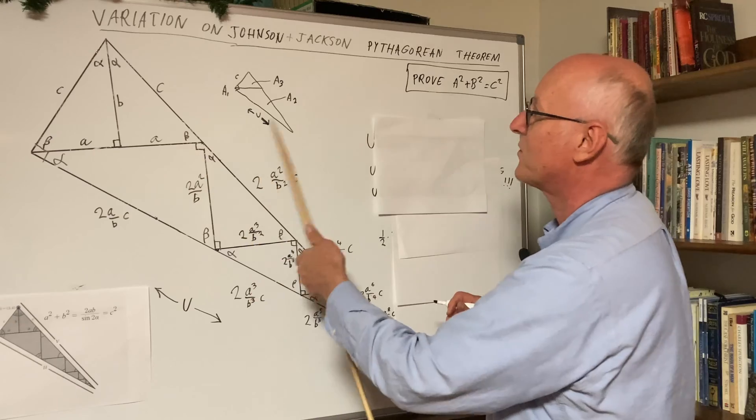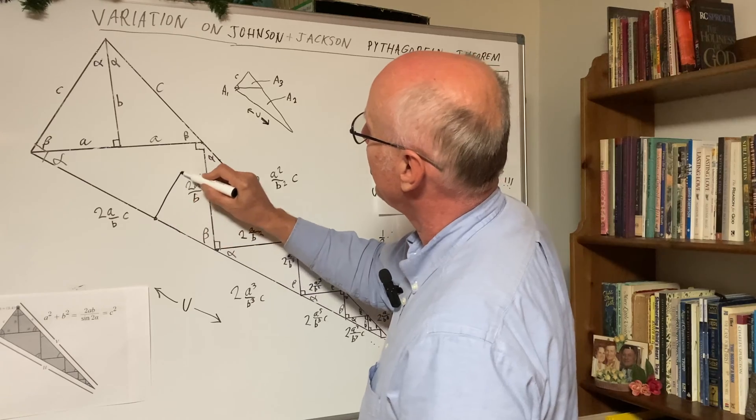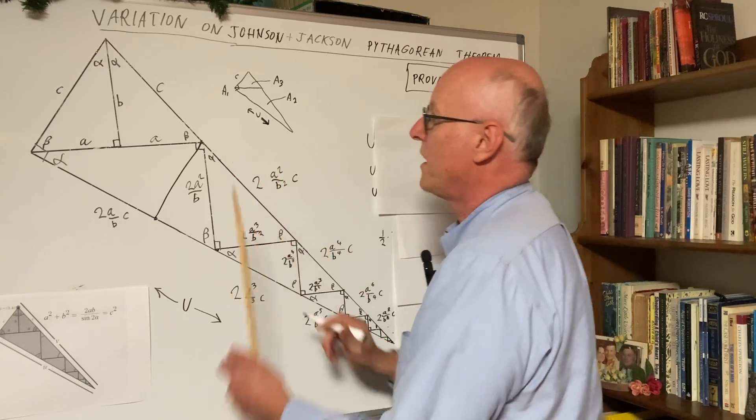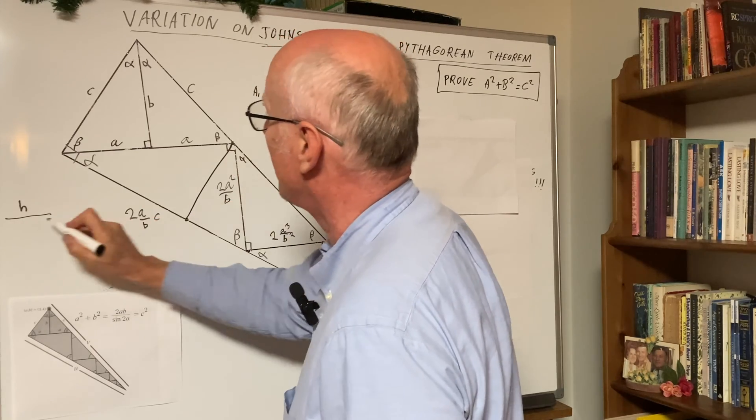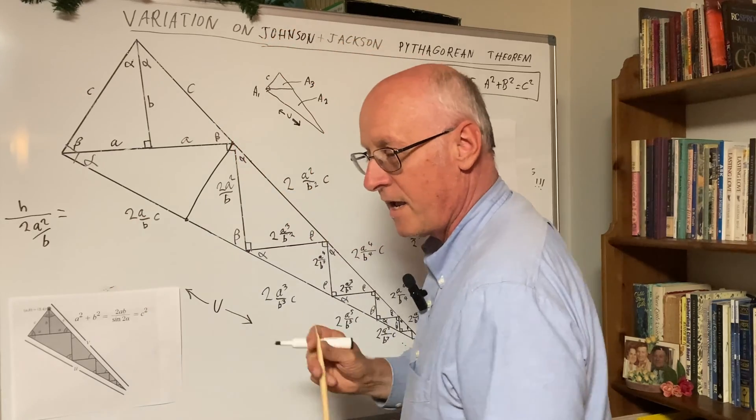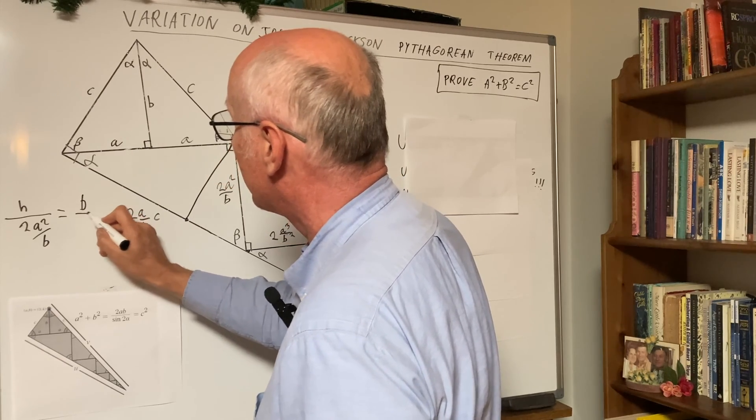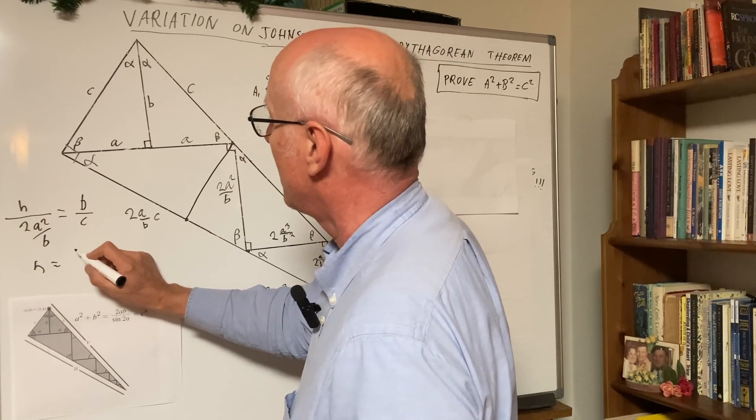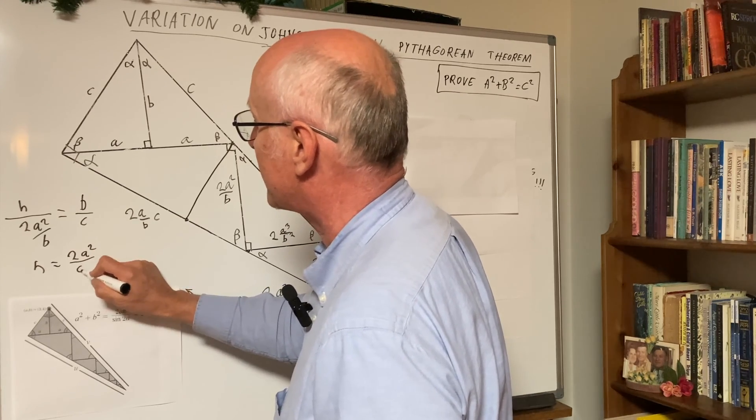One thing that we need to do is in order to do the area on a2, we need another length right here. And that length, well, how do you do that? You say h, h to 2a squared over b is the same as b to c, from which we get h equals 2a squared over c.